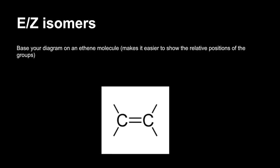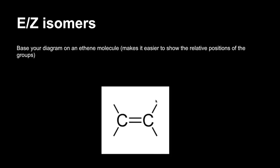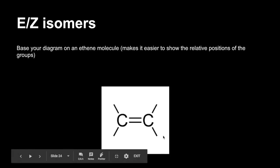I'm going to finish off with some very quick general tips. EZ isomers. Base your diagram on an ethene molecule. It makes it much easier to show the relative positions of the groups, a bit like we did in the addition polymerization. Base it on that. Then add your atoms or groups here and here. Then you can see whether they are on the same side of the double bond, and therefore the Z isomer, or they're on opposite sides of the double bonds, and it's the E isomer.